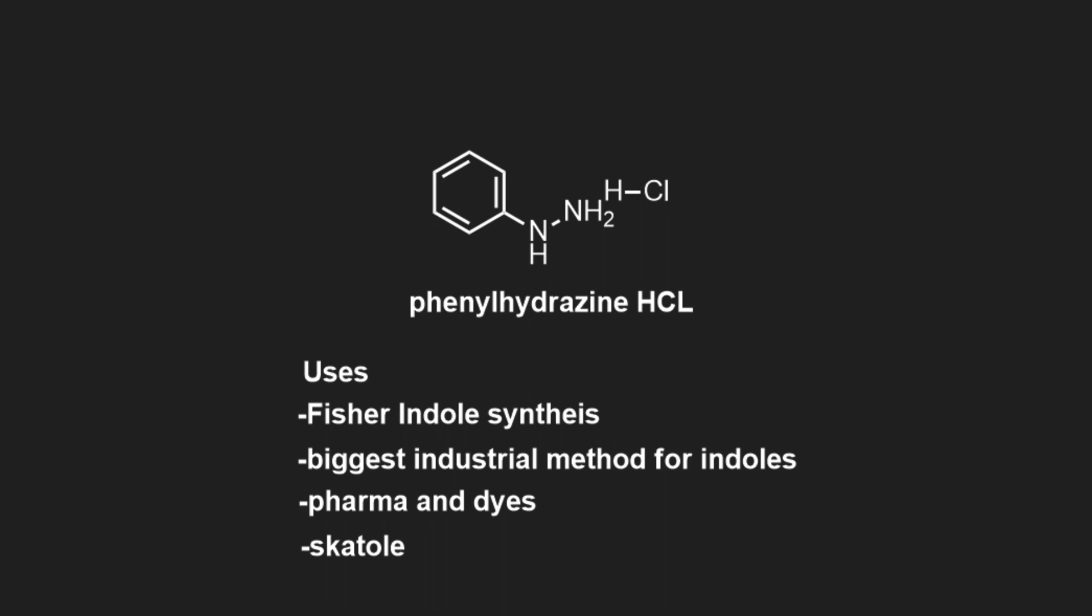In this video I want to make phenylhydrazine hydrochloride. Phenylhydrazine hydrochloride can be used for Fischer indole synthesis. It's still the biggest industrial method for producing indoles. The indoles can be used for pharmaceuticals and dyes. I will use the phenylhydrazine hydrochloride in a future video to produce skatole.